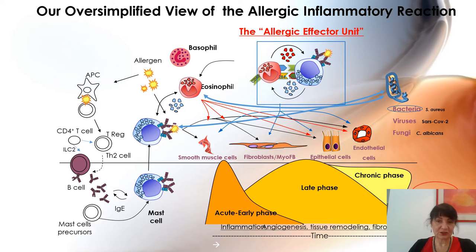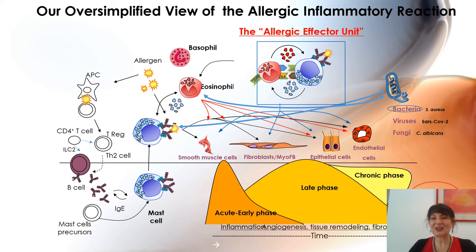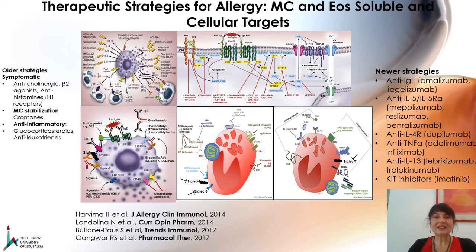We defined what I am going to explain as the allergic effector unit, which is created during the late phase of allergy — the early phase is only due to mast cells. They stay together in the tissue when the reaction becomes chronic. To help the reactions become chronic, we also have invading microbes such as S. aureus, which is the most well-defined bacteria invading atopic tissues, fungi — we study Candida albicans in our lab — and perhaps viruses such as SARS-CoV.